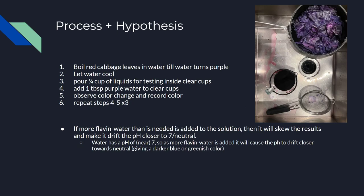Off to the right you can see — I'll talk about that a little bit later. The process is: you want to cut up some red cabbage, then you want to boil the leaves in water until the water turns purple.